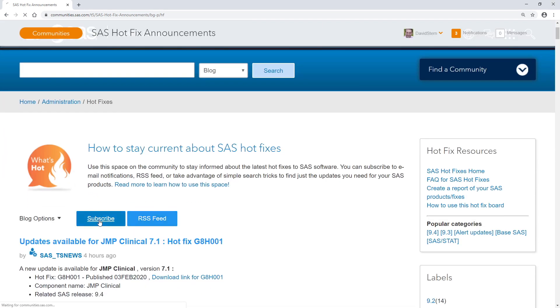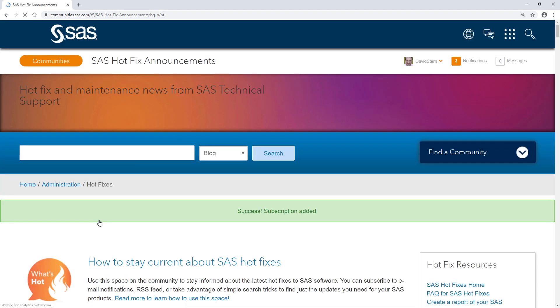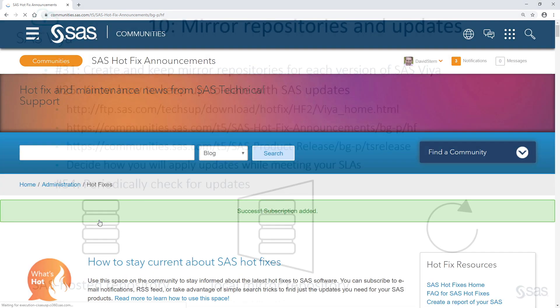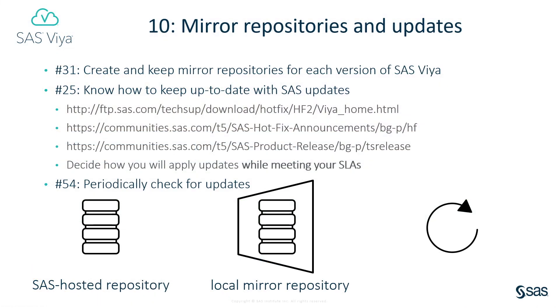Think about when and how you will apply updates while keeping your service level agreements with your users. When you know how to do that, periodically check for updates.